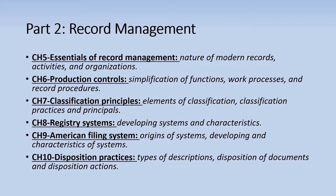Chapter six notes that public records are increasingly overproduced, and Schellenberg recommends attempting to simplify the functions, work processes, and record procedures. He notes that simplification should be a collaborative process involving high-level administrators, public officials, and specialized records officers.